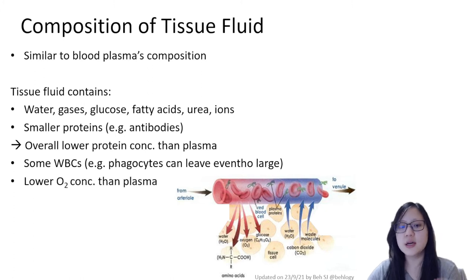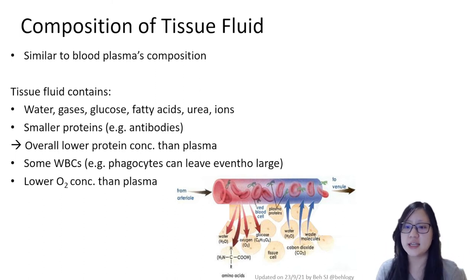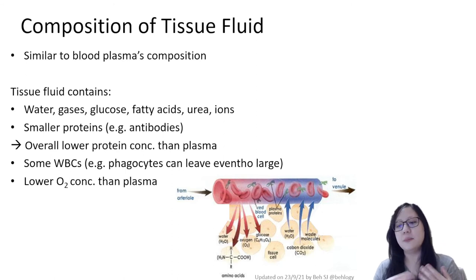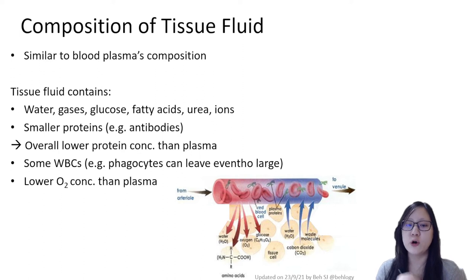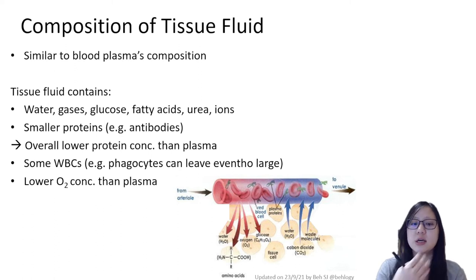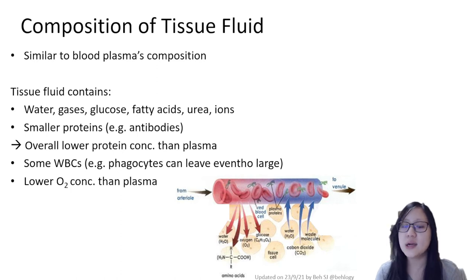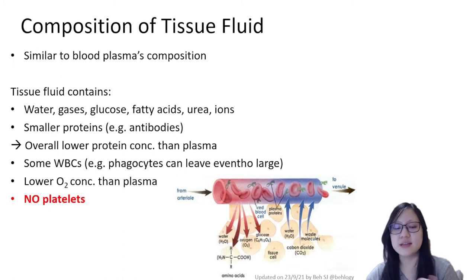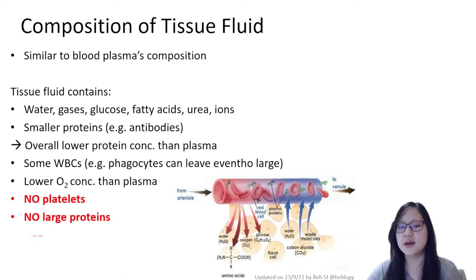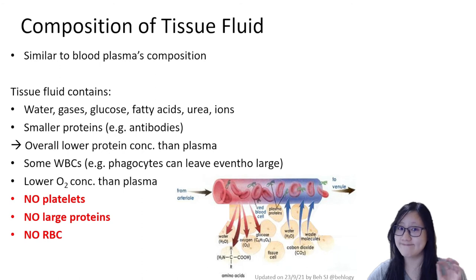Tissue fluid also has a lower oxygen concentration than blood plasma, and this makes sense because the vessels contain oxygenated blood — the blood carries oxygen — and therefore the tissue fluid will always have a lower oxygen concentration. This is a good thing, as oxygen can diffuse from the vessels into the cells via the tissue fluid because of that concentration gradient. To recap, tissue fluid has no platelets, no large proteins, no red blood cells, and none of those have special mechanisms to exit like some phagocytes do.